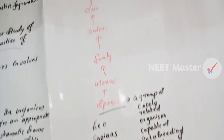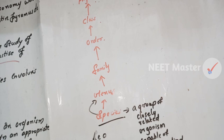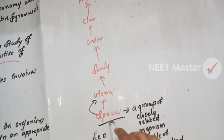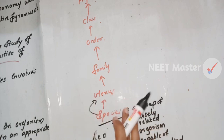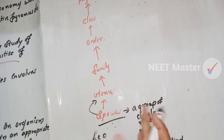The next level is Genus. When we say Panthera, that is a genus name. We also use Mangifera as a genus. The binomial nomenclature system uses the genus name followed by the species name. One genus can have different species — for example, Panthera includes lion, tiger, and leopard.